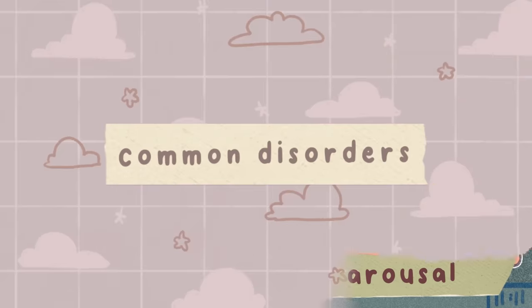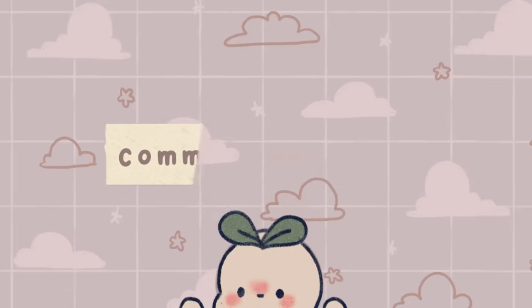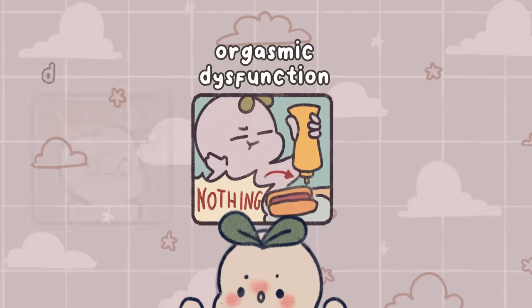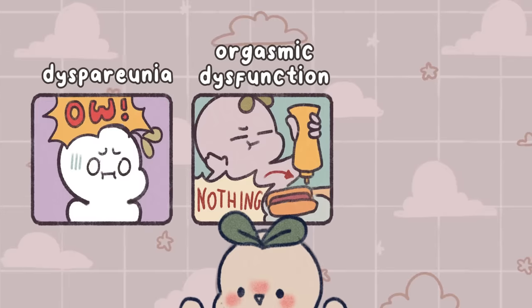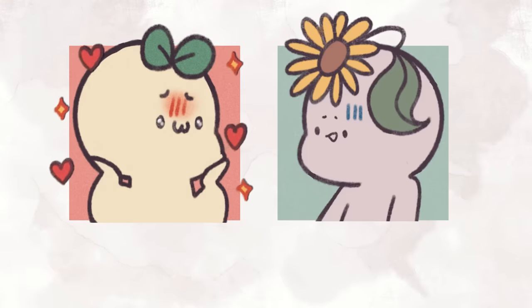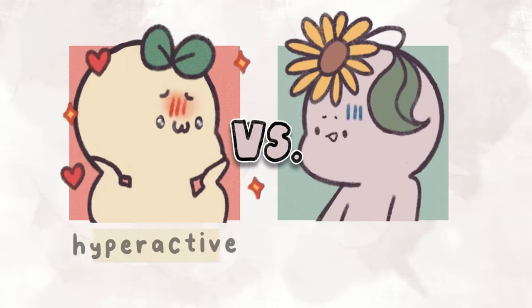Examples of common disorders include orgasmic dysfunction, dyspareunia, and premature ejaculation. However, today we'll be focusing on two: hyperactive and aversion.